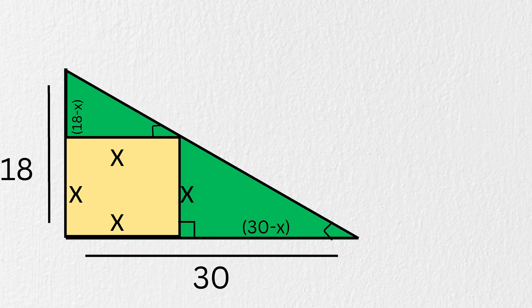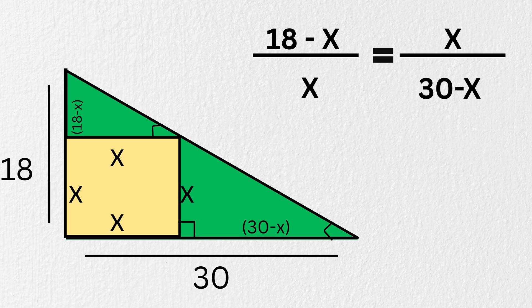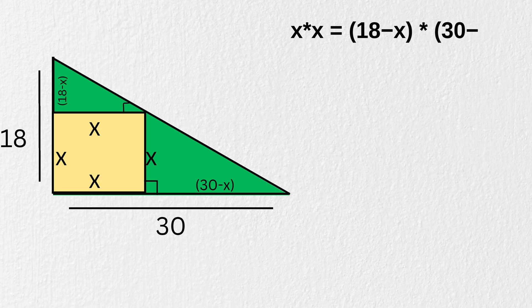So, we write the proportion like this. 18 minus x divided by x is equal to x divided by 30 minus x. Now, we will do cross multiplication. That just means we multiply across the equal sign diagonally. This gives us x times x is equal to 18 minus x times 30 minus x.